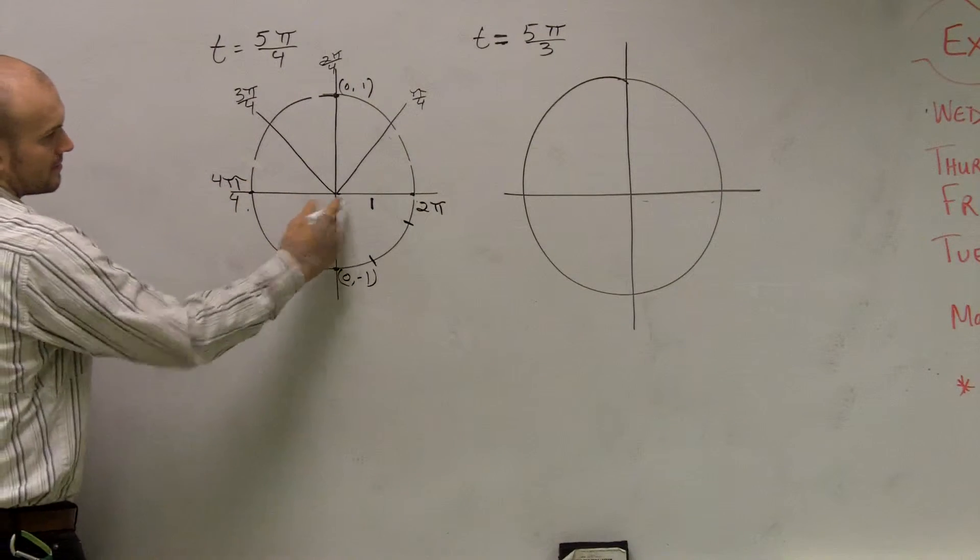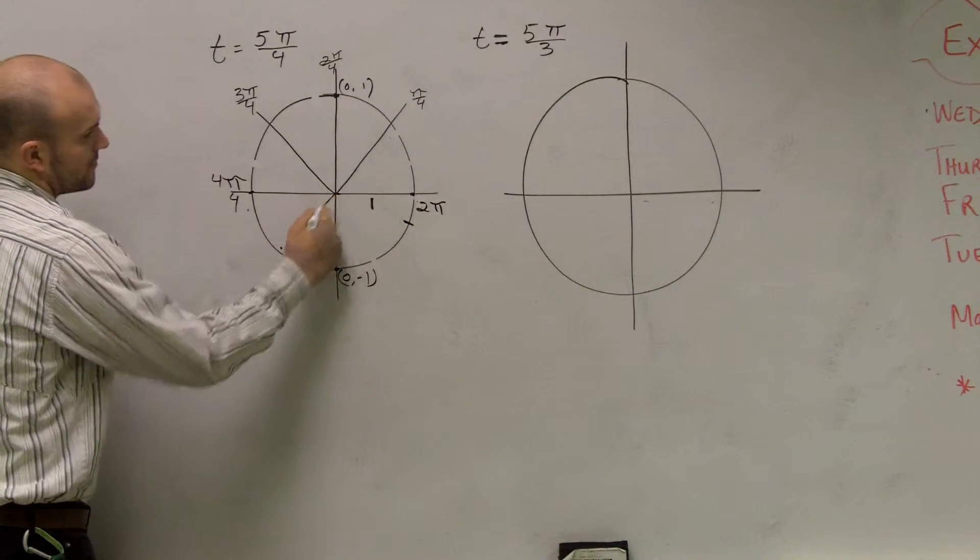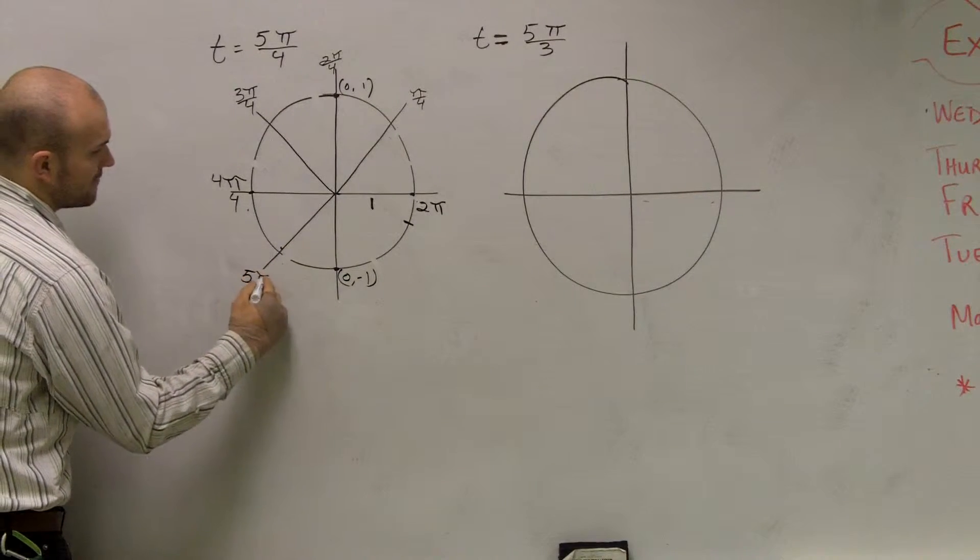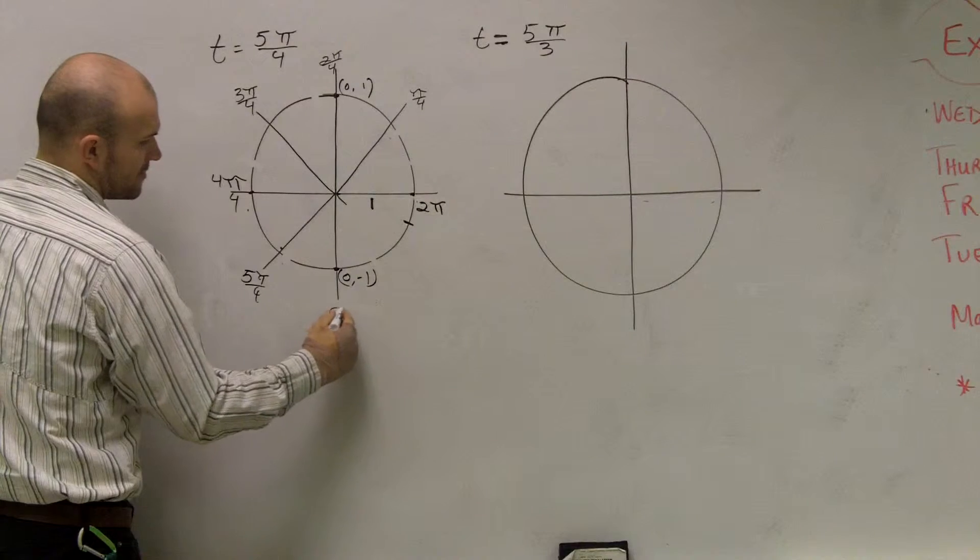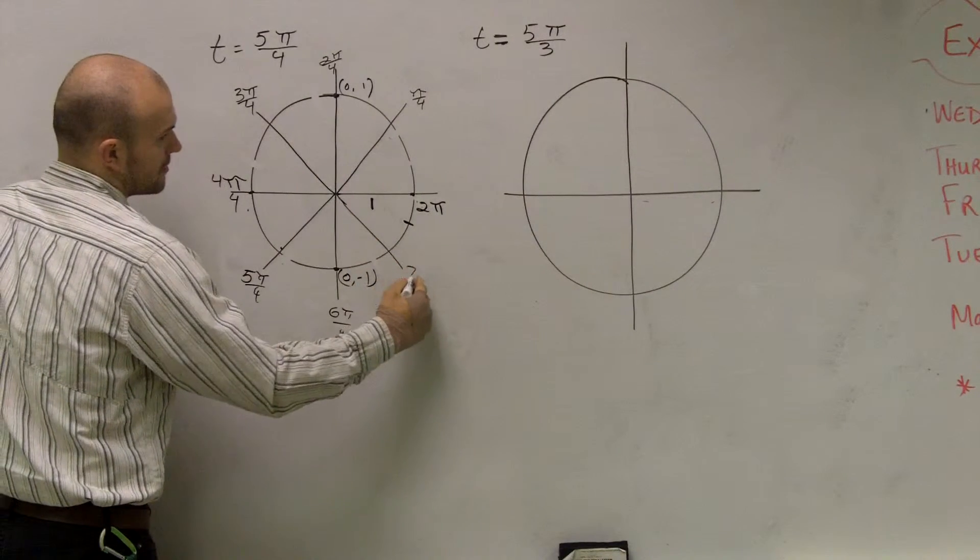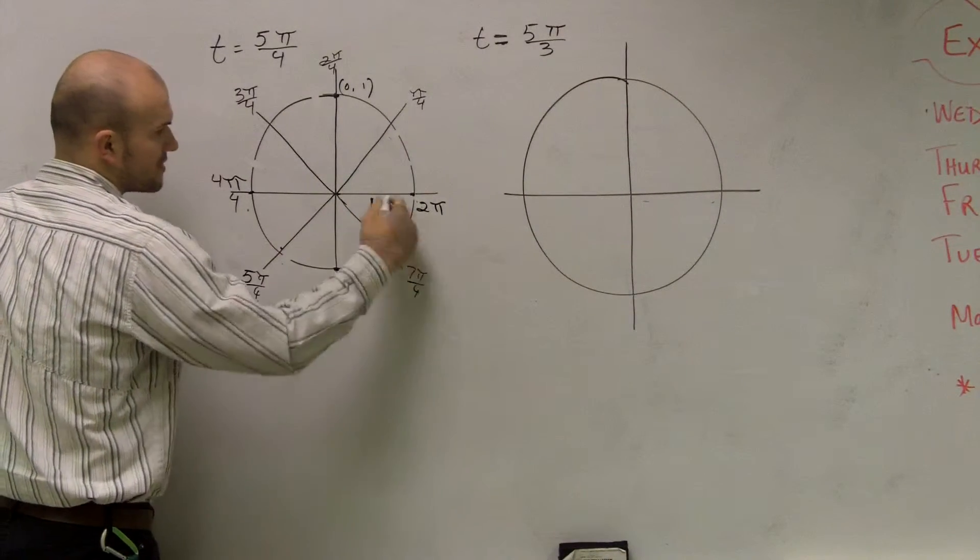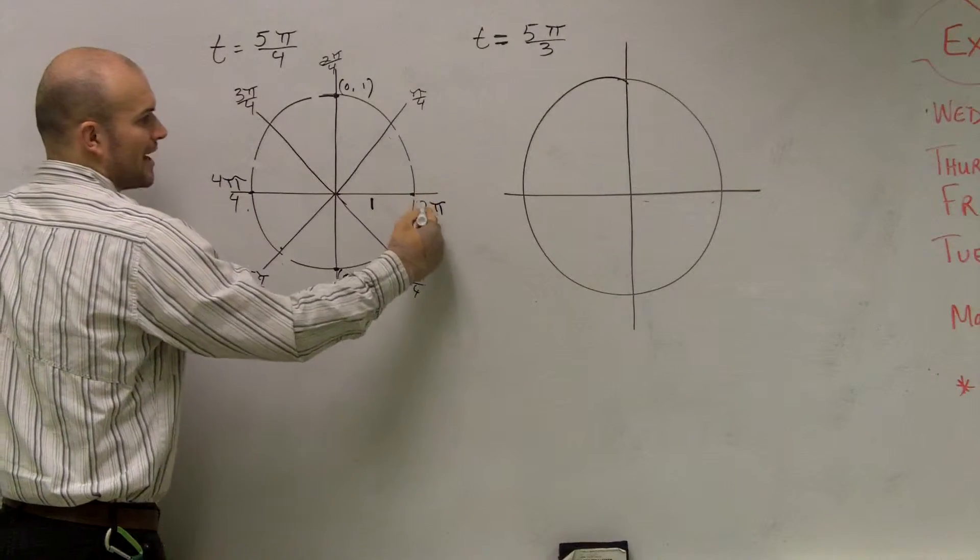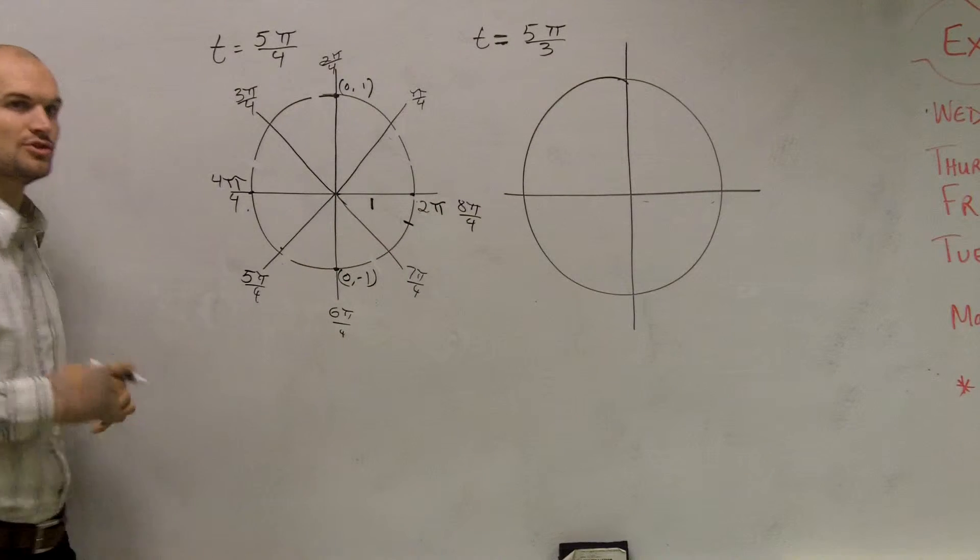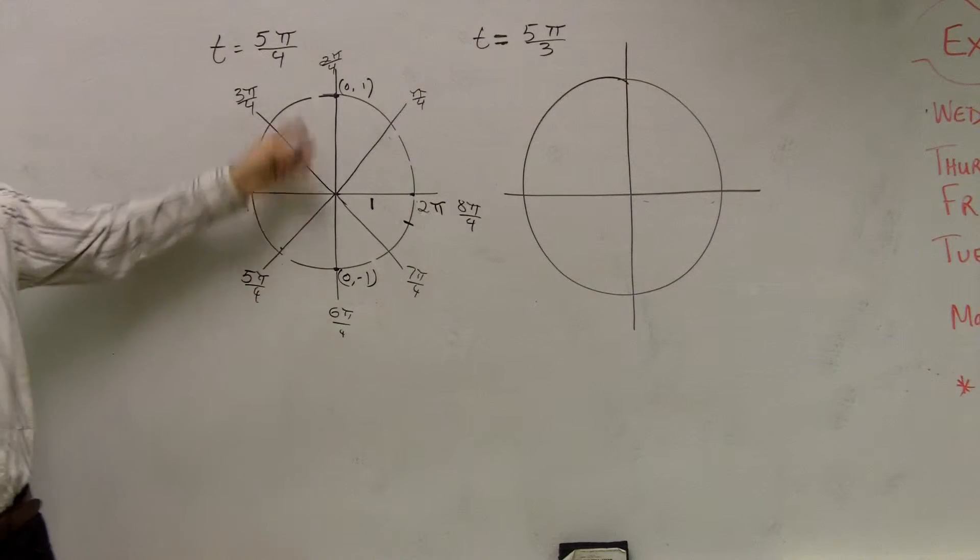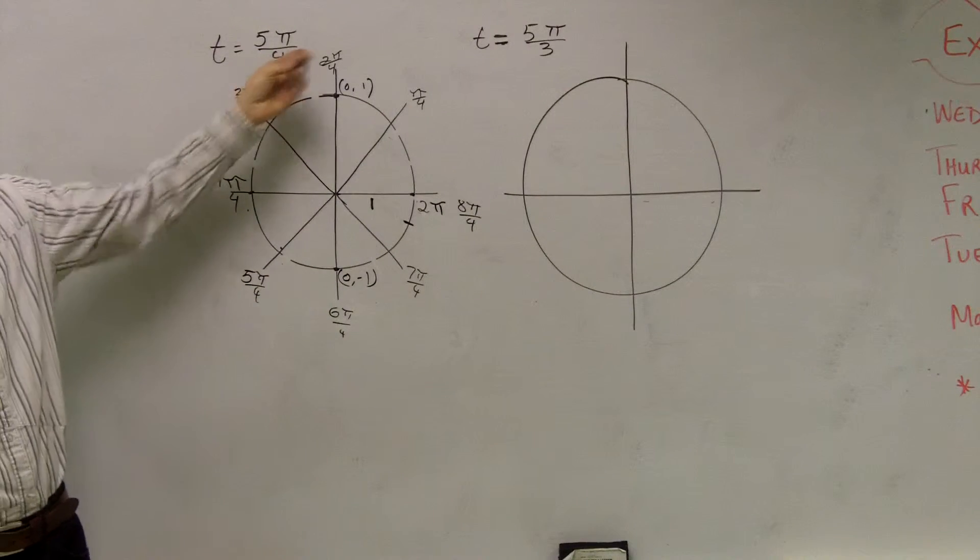All right. Then this one would be 5 fourths, and this one would be 6 fourths, 7 fourths. And then this one is 2π, or what we could call 8π over 4, which that still reduces to 2π, right?